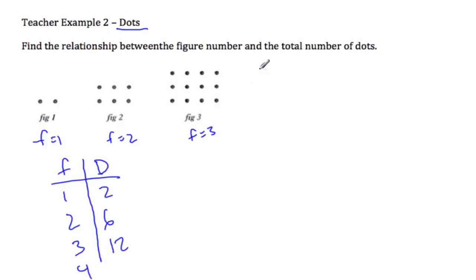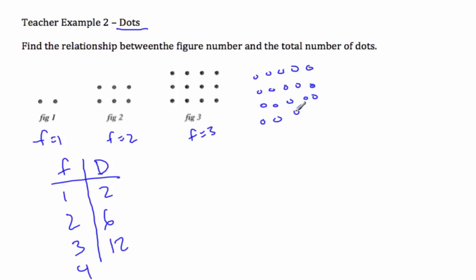So if I had four — one, two, three, four across and one, two, three, four down — let's extend our pattern. If I had that, this is now four by five, so we've got 20 dots there.